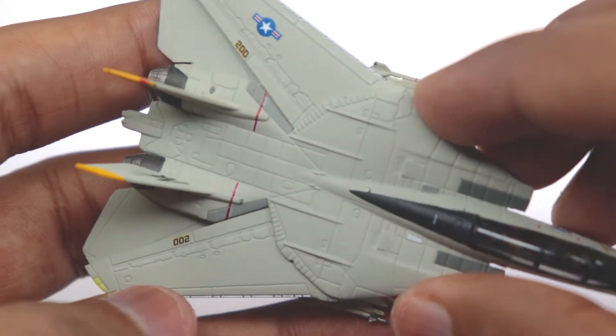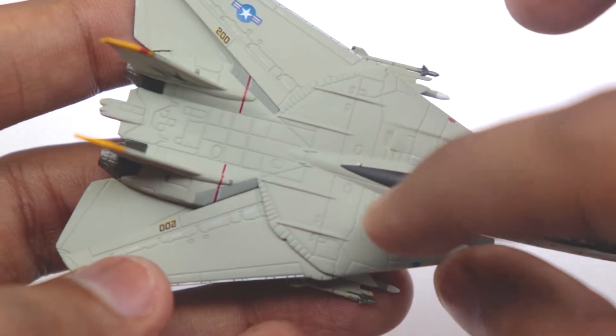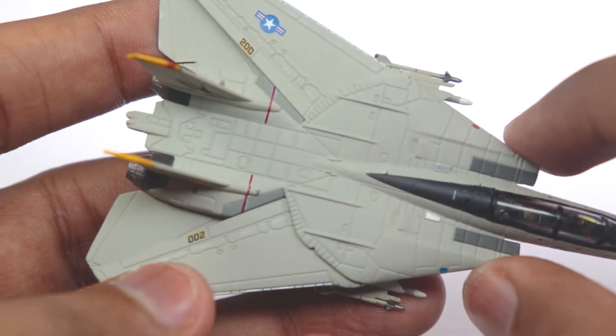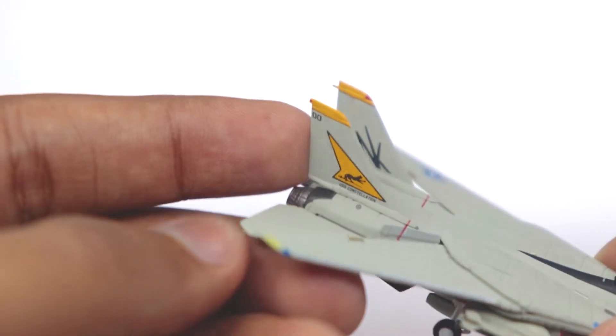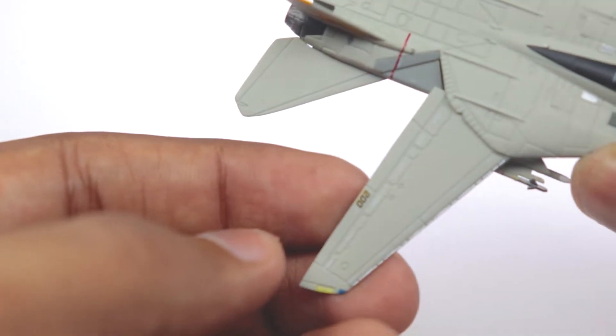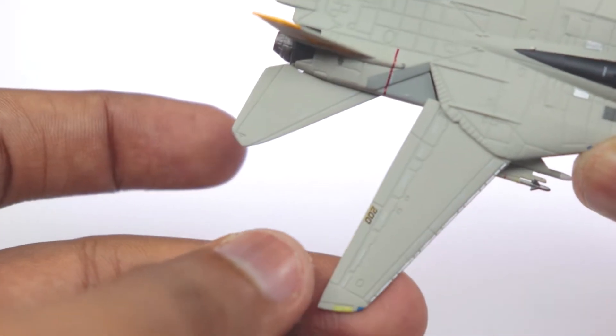Now if we move on to the top you can see that the panel lines and all the rivet joints are pretty well detailed with all the ailerons and elevators and rudders with a nice paint job. As you can see the number is also written over here the number 200 with all the lights on both the ends as you can see.